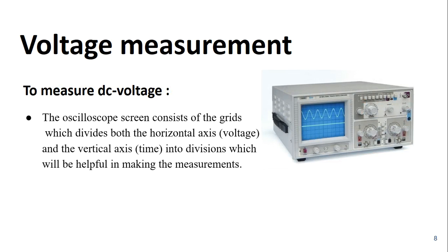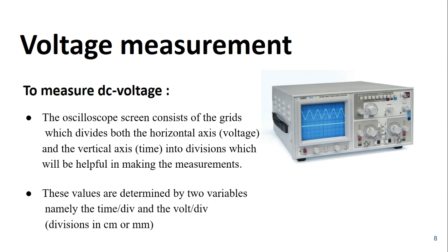The oscilloscope screen consists of grids which divides both the horizontal axis and the vertical axis into divisions which will be helpful in making the measurements. These values are determined by two variables, namely the time per division and the volt per division.